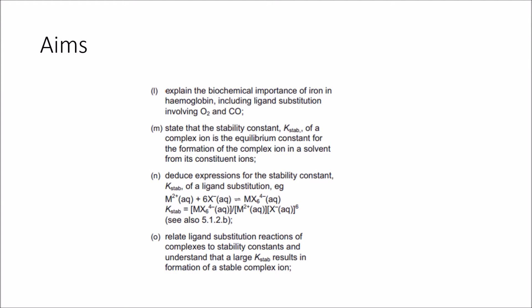So what does our specification tell us we need to do? We need to explain how important iron is in haemoglobin, this molecule in red blood cells, including how ligand substitution involving O2 and CO affects that. We need to state that the stability constant, abbreviated to K-STAB, is basically Kc, the equilibrium constant for the formation of a complex ion. We need to be able to put equations into the K-STAB equation and deduce values by substituting values into that equation. And finally, we need to be able to relate ligand substitution and understand what K-STAB actually means relating to the stability.